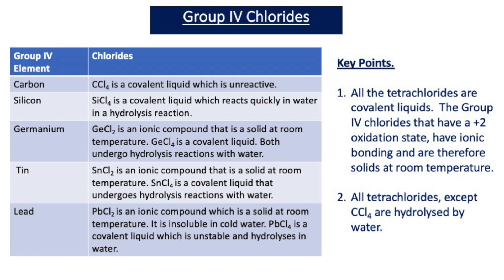Lead also forms two chlorides: PbCl2, which is an ionic compound and a solid at room temperature. Lead 2 chloride, the most stable chloride of lead, is insoluble in cold water — and that's common for lead compounds, as most lead compounds are insoluble in cold water. It is possible to get lead 2 chloride to dissolve in hot water.